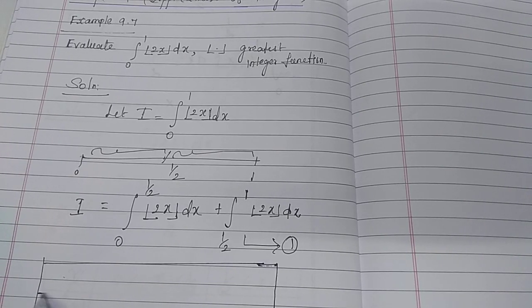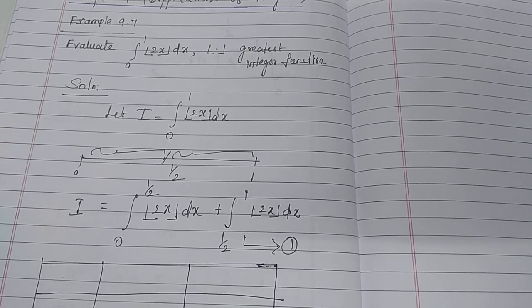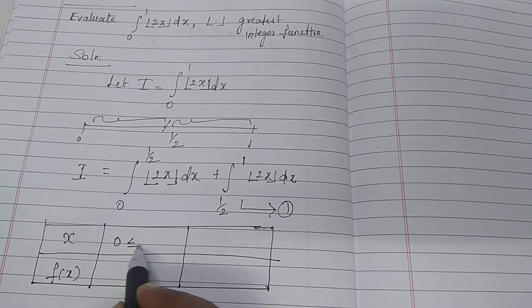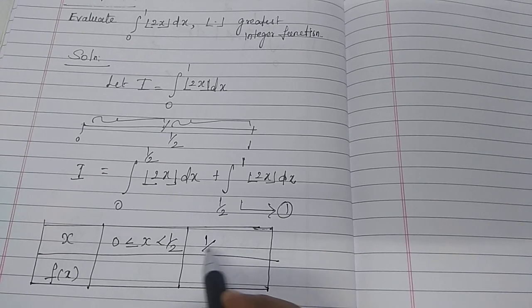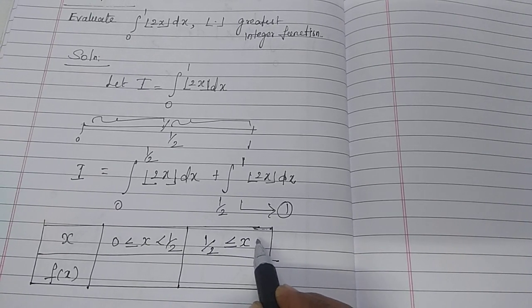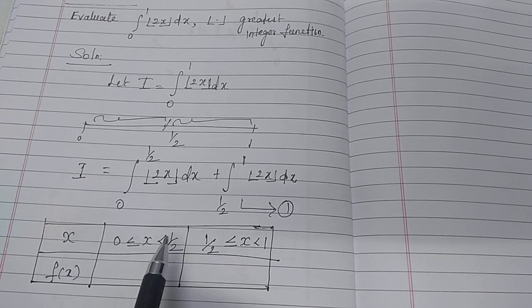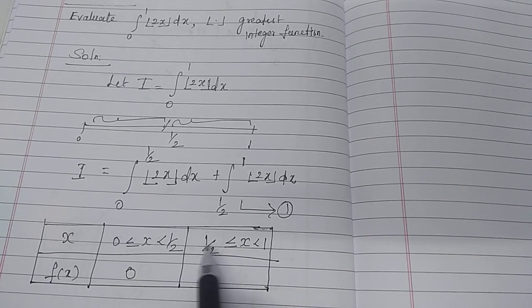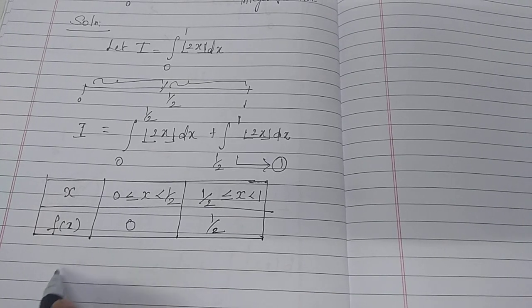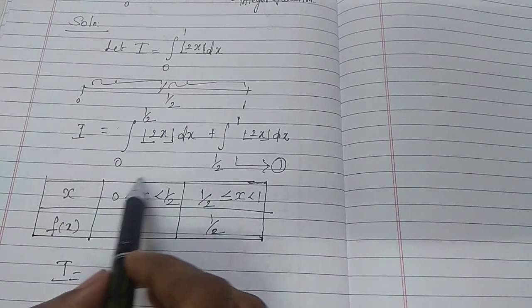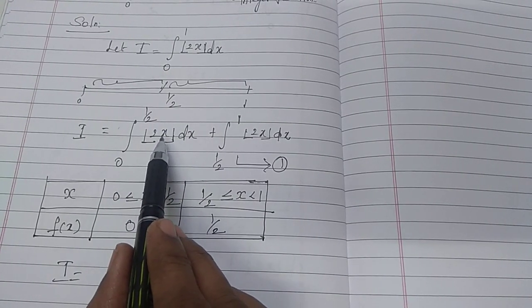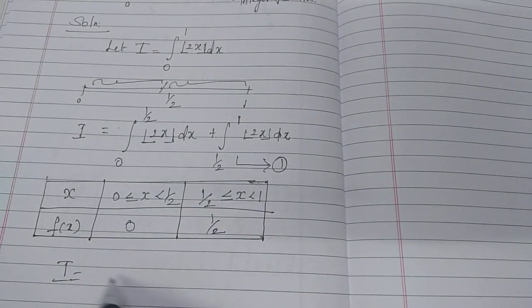Now recall the definition of the Greatest Integer Function. When x takes values in 0 ≤ x < 1/2, by the definition of the Greatest Integer Function, [2x] takes the value 0, so the first integral term becomes 0.